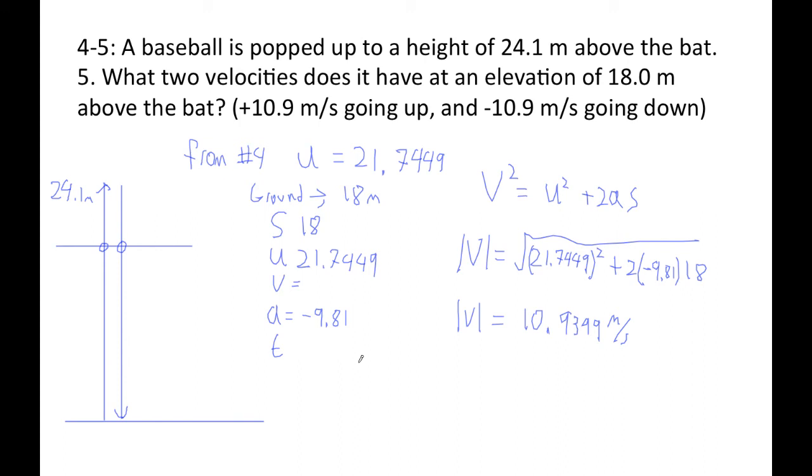Okay, so what that means is that v is equal to positive 10.9 with sig figs, right? Or negative 10.9 meters per second, because this is the absolute value, right? If the absolute value equals this, then it's this or this, right? And in math class, you probably just looked at that and said, well, I'm just going to use the positive answer.